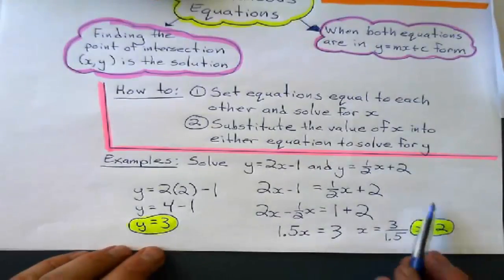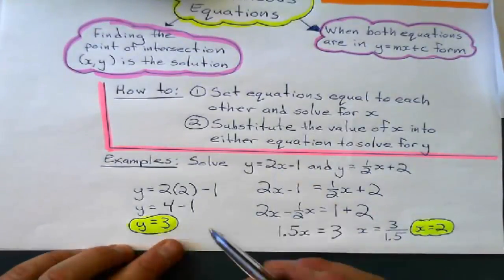That is my solution, which is my point of intersection. x equals 2, y equals 3.